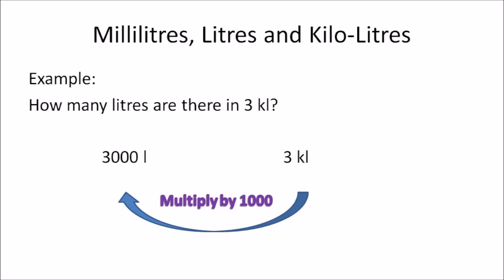In this example, how many liters are there in 3 kiloliters? You need to convert kiloliters to liters. The order of operation is to multiply the amount in kiloliters by 1000. So 3 kiloliters multiplied by 1000 gives you 3000 liters.